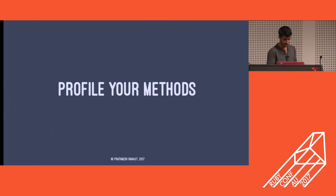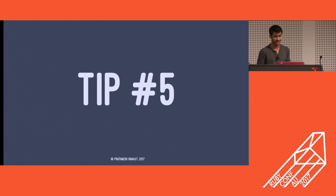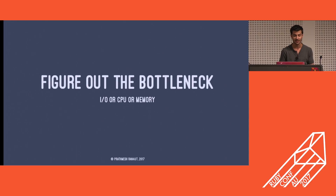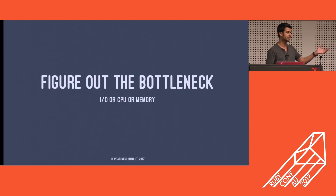Moving on to tip four: profile your methods. You should always profile your methods — this trick could actually help you find the lowest hanging fruits to make your app run fast. Tip number five: figure out the bottleneck. When you generate a benchmarking suite, you need to know why your code is running slow. You don't want to waste time optimizing functions that are rarely used. Is it the IO causing your code to run slow? Are you performing too many CPU calculations? Or are you allocating too many objects?